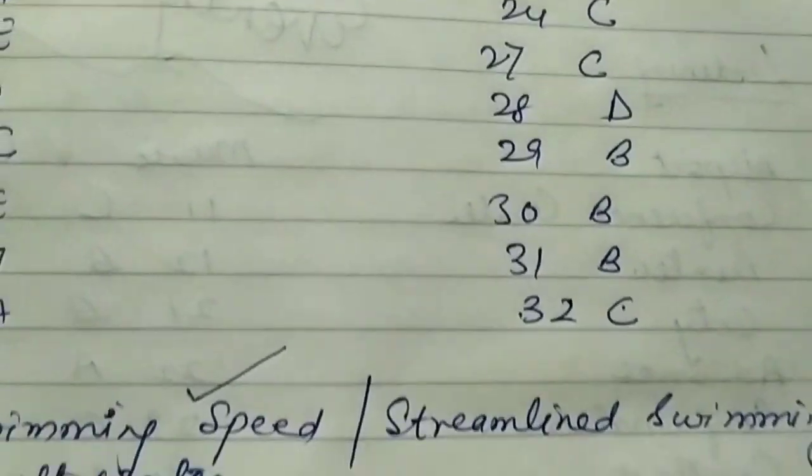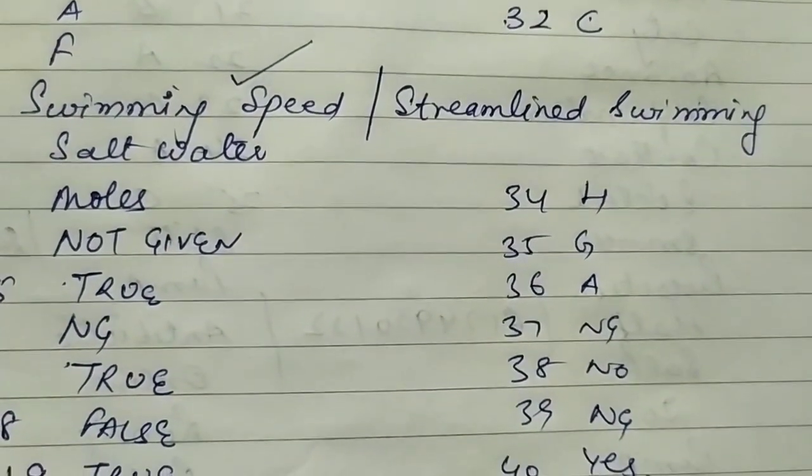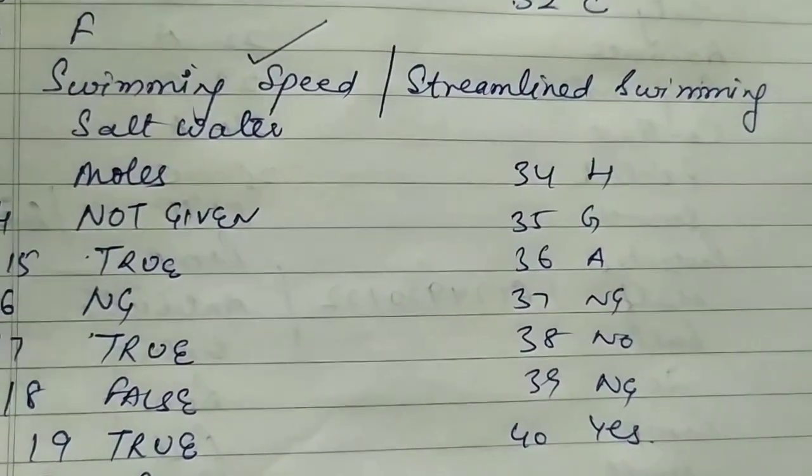31st B and 32nd C, 34th is H, 35th is G, 36th is A, 37 not given, 38 no, 39 not given, 40th yes.